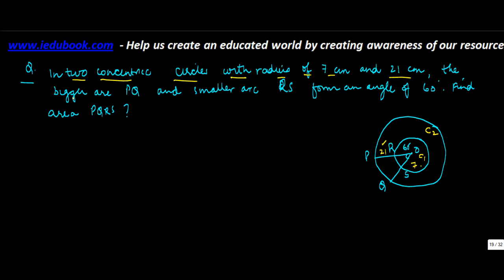The bigger arc PQ and the smaller arc RS form an angle of 60 degrees. You have PQ, you have RS, both of them form an angle of 60 degrees at the center.